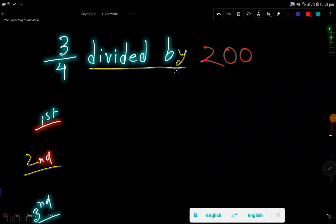3 over 4 divided by 200, right? Okay, so at first step I will translate this thing. So 3 over 4 divided by means division sign, then we have 200.